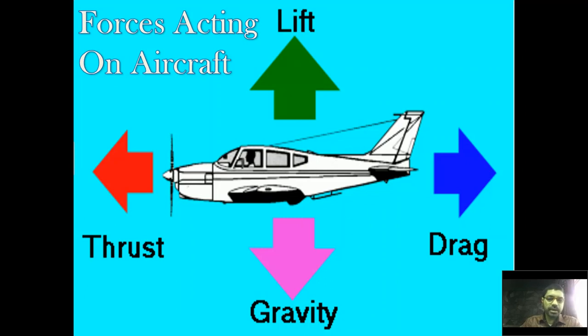So they provide a force called thrust of the aircraft. And then there are two negative forces which are always acting on the aircraft and trying to bring down the aircraft. One of which is a natural force called gravity.